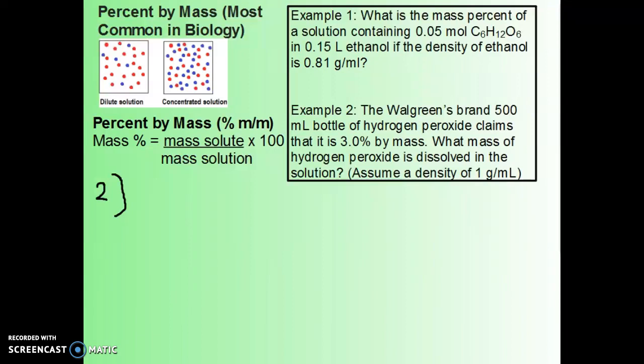So when you go to the store, you might sometimes see bottles labeled with their concentration in terms of percent by mass. In this example, if you went to Walgreens and bought a 500 milliliter bottle of hydrogen peroxide and read on the back that it says it's 3%, we could use this information to figure out what mass of hydrogen peroxide is actually dissolved in the solution. One important piece of information is that hydrogen peroxide is typically dissolved in water, so we can assume a density of one gram per milliliter because that's the density of water.